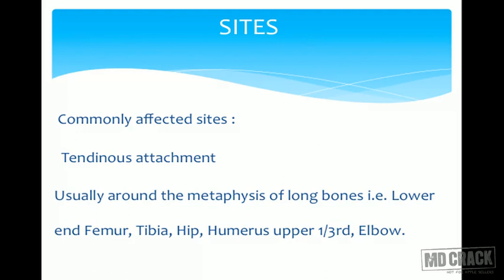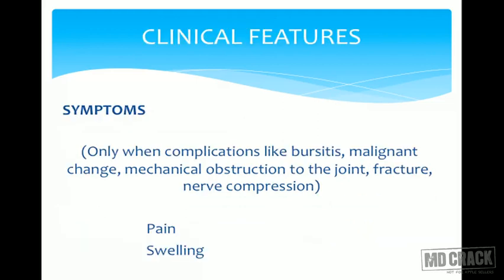Common sites of affection for osteochondroma are around the tendinous attachments in the metaphysial region of bones, including the tibia, hip, upper third of the humerus, and elbow.